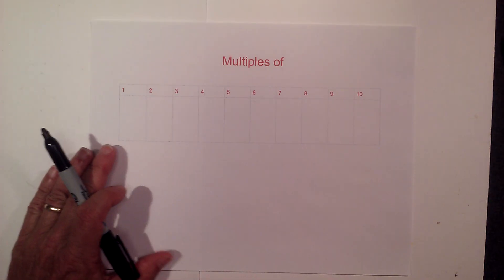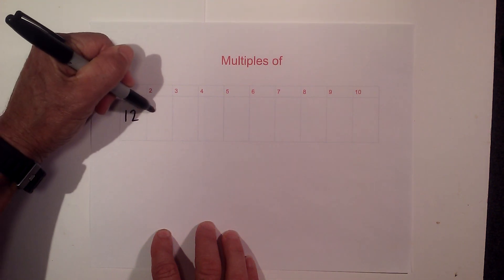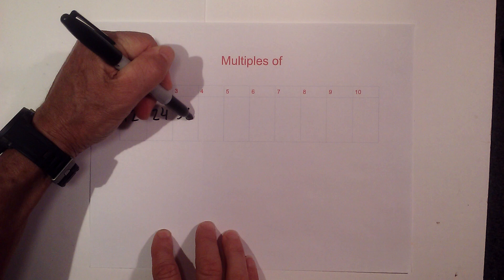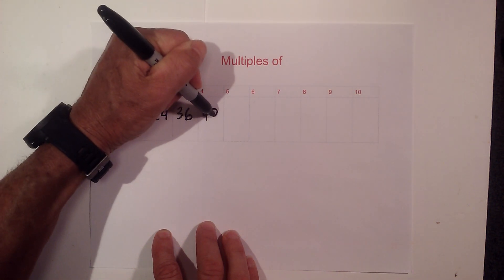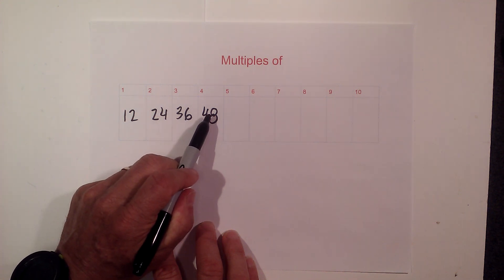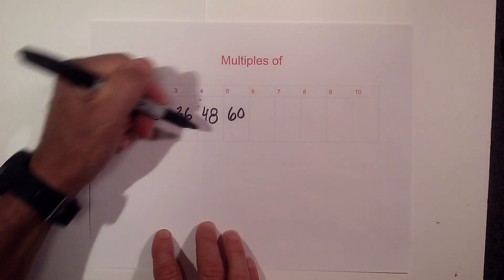Okay, the multiples of 12 up to 10 are as follows: 12, 24, 36. And with 12 there's a pattern, each time it goes up by 2. Notice that 4 goes up by 2 to 6, 6 goes up by 2 to 8. Let's continue, so this would be 60,